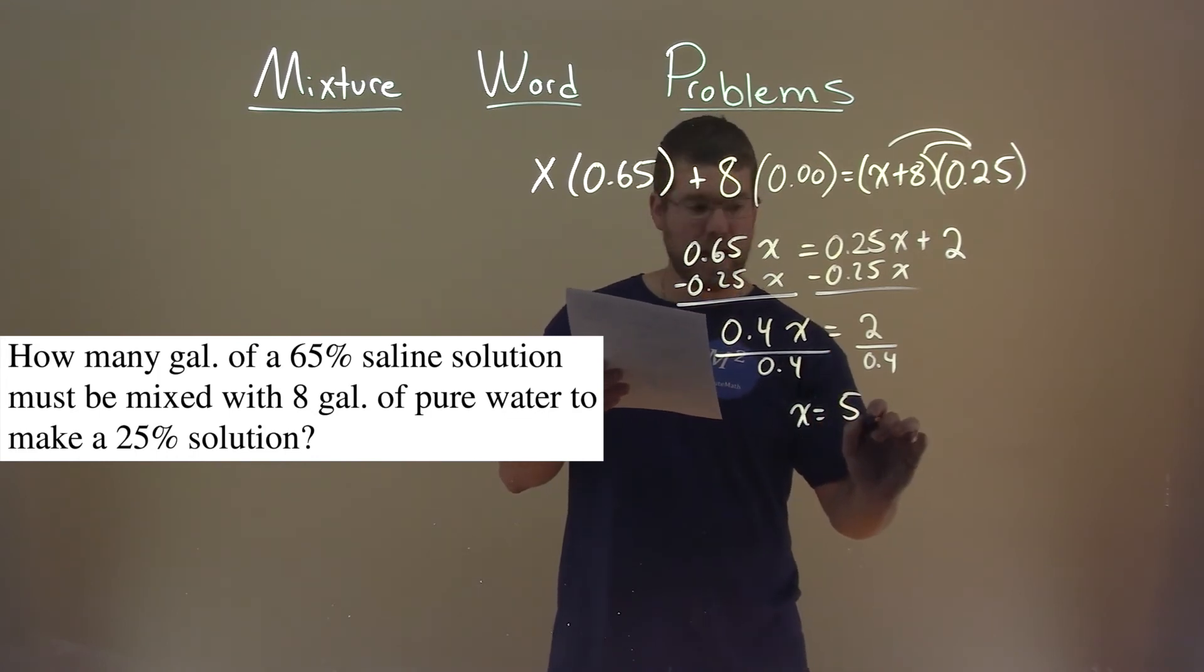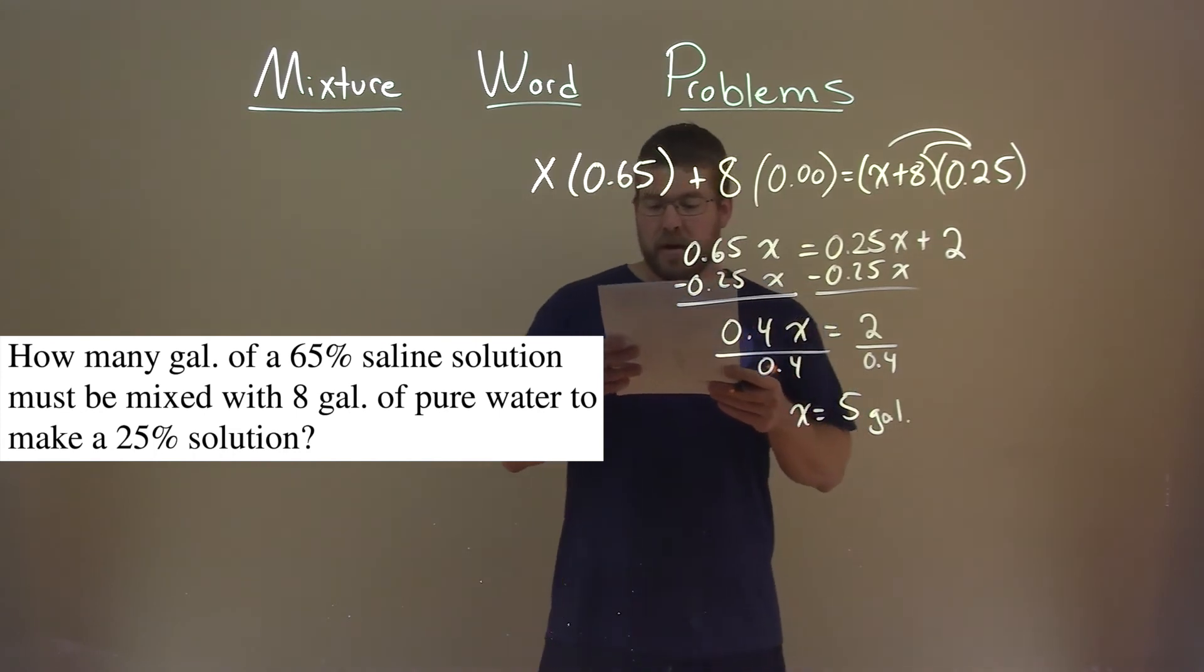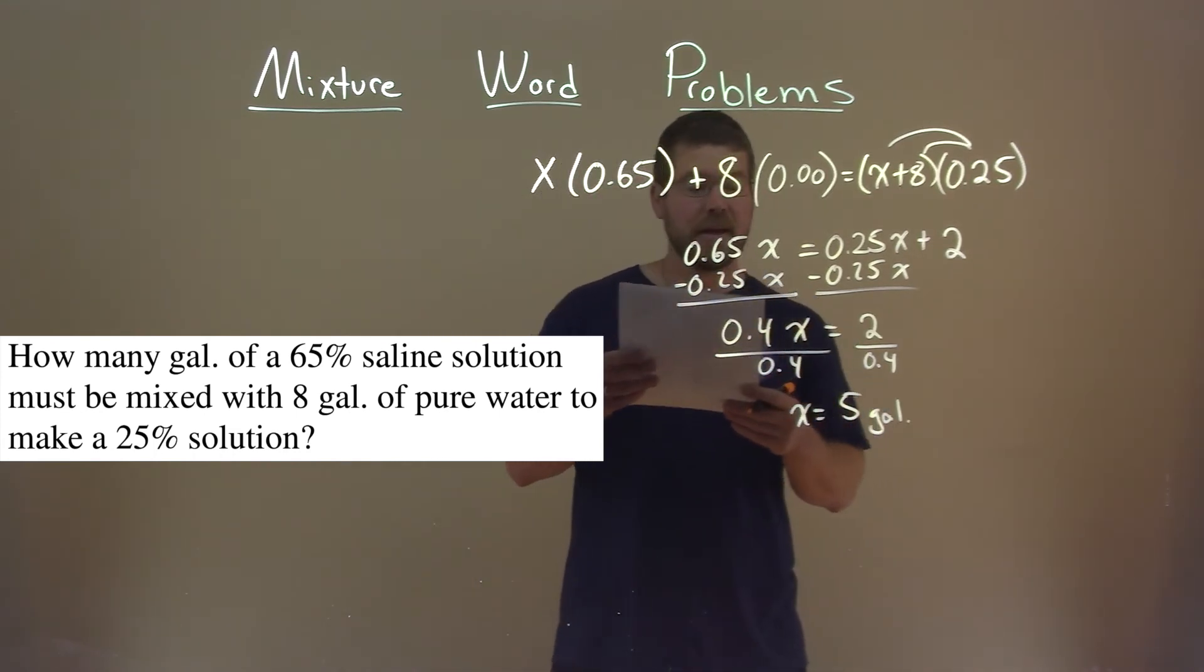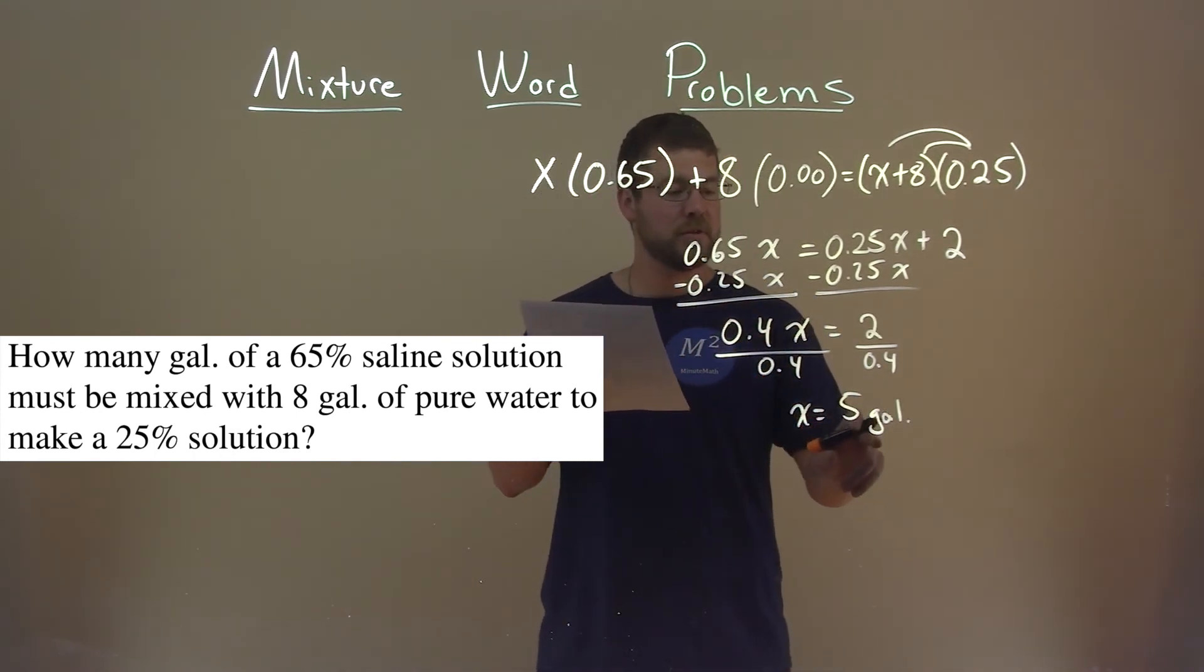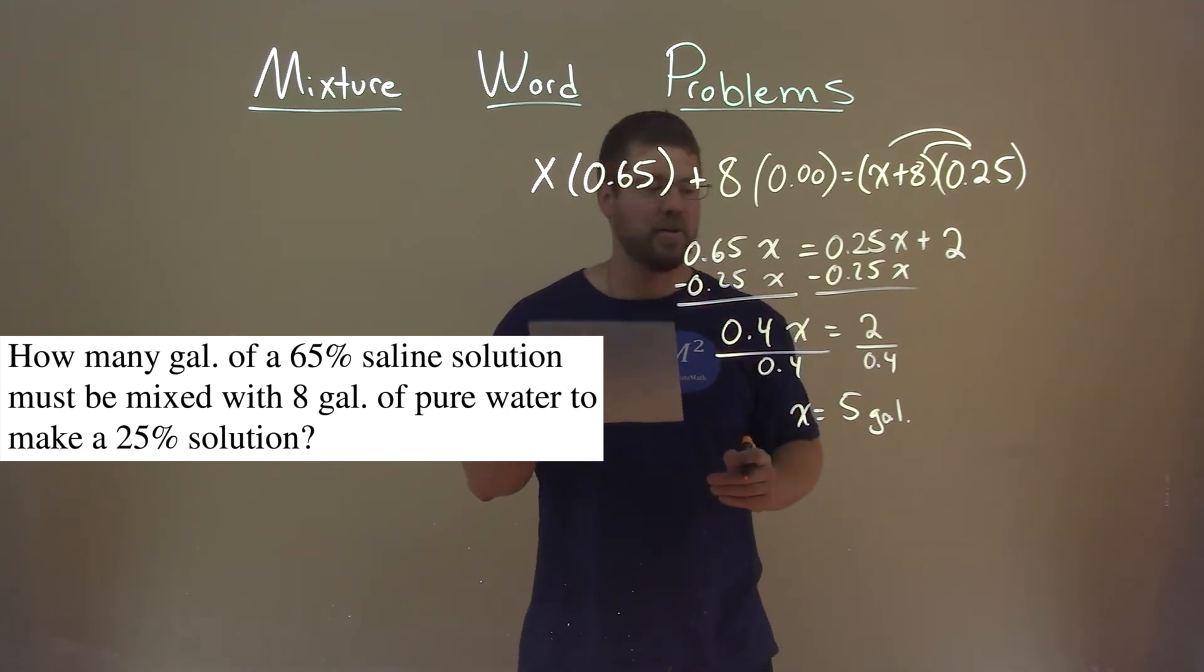And it's 5 gallons. So, what is it? How many gallons of 65% saline solution do we have? We have 5 gallons of that.